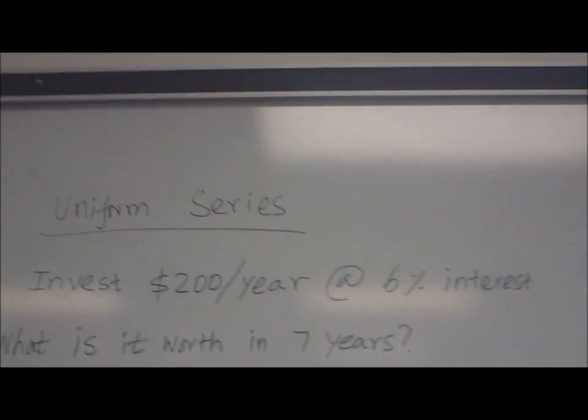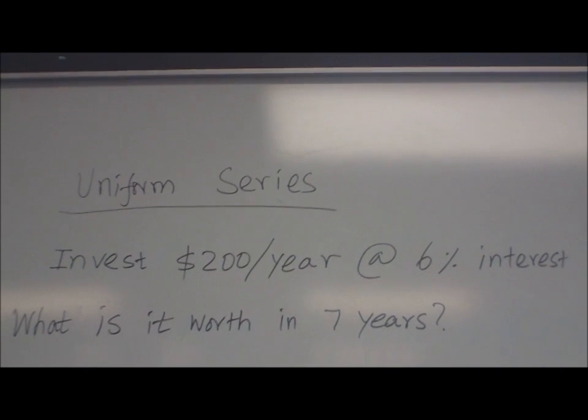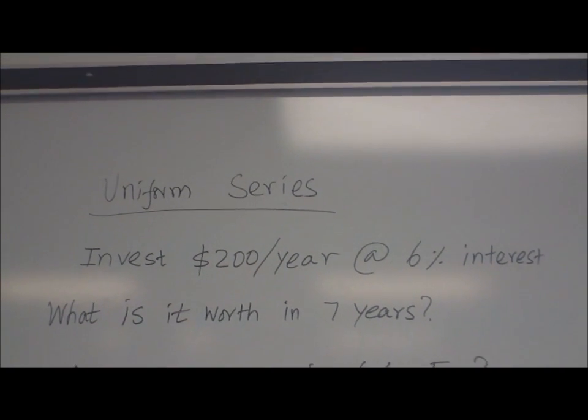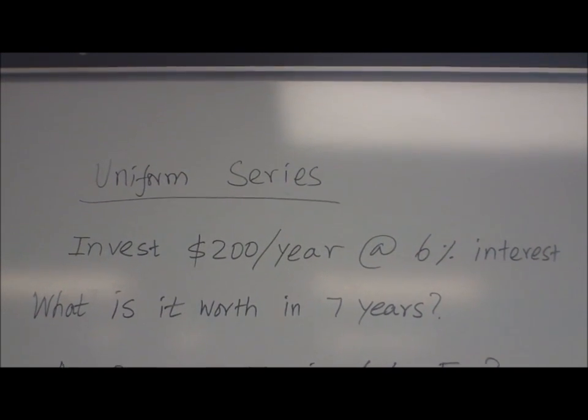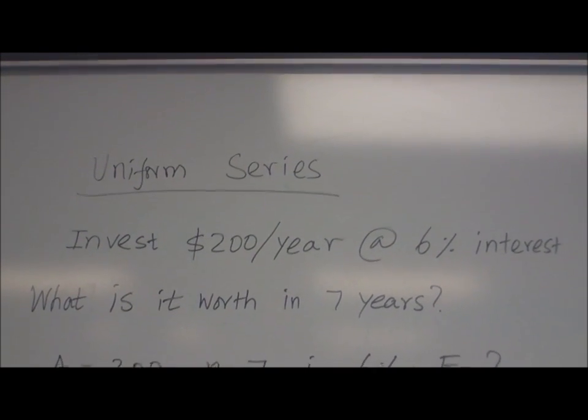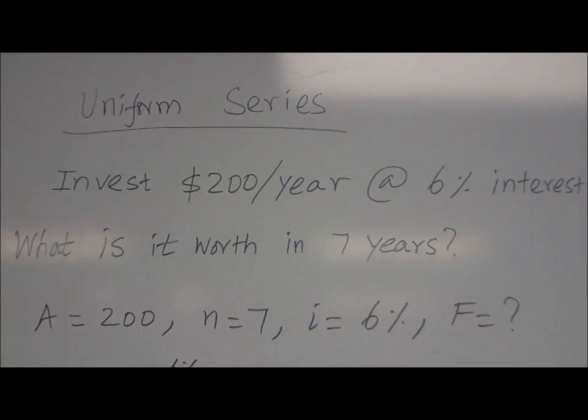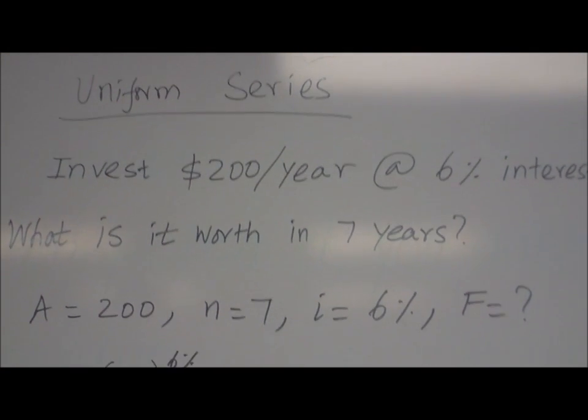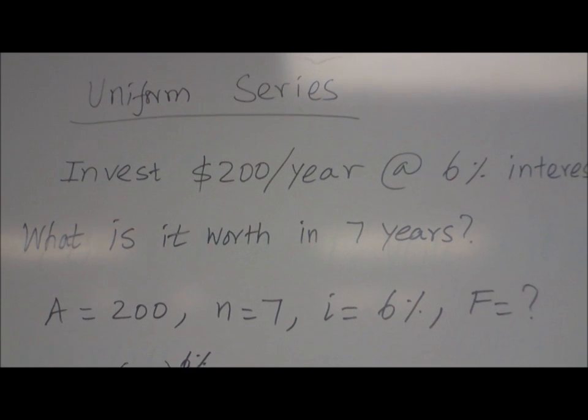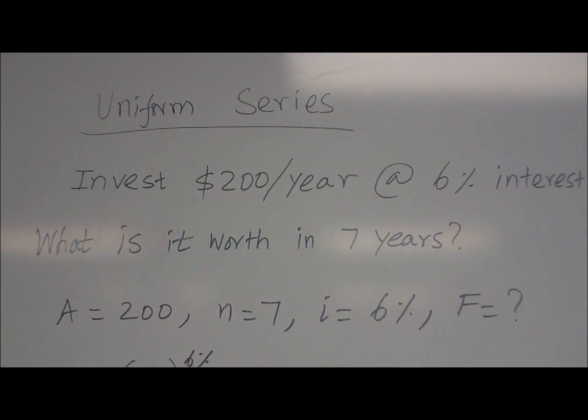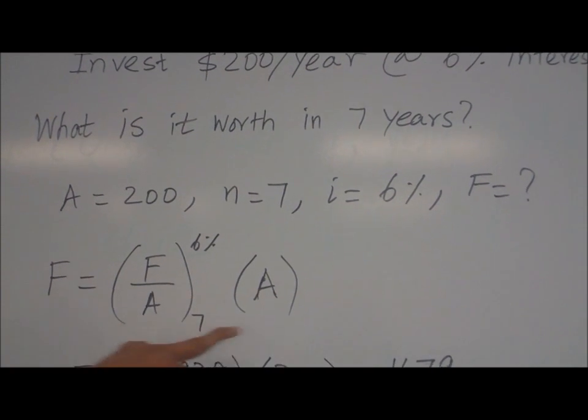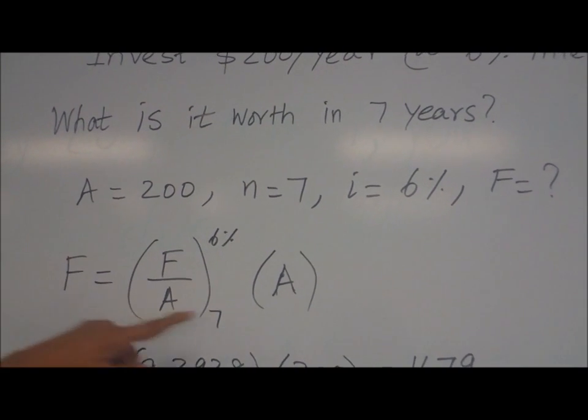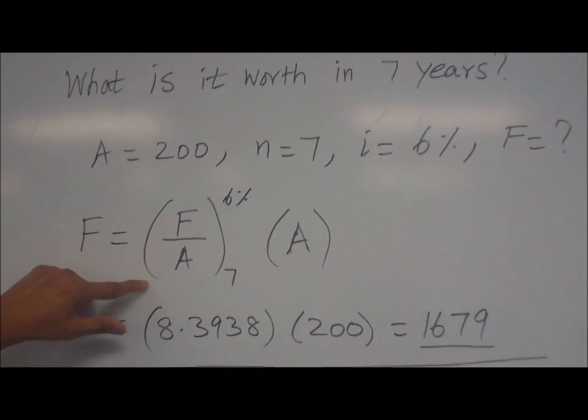Now let us see uniform series. Here example is, invest two hundred dollars per year at six percent interest. What is it worth in seven years? Every year you are investing two hundred dollars uniformly. So A equal to two hundred, N equal to seven, I equal to six percent. What is the future value? So F equal to F over A times A. Just like algebra, A cancels, you get F.